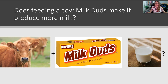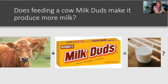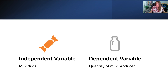Here's another fun example. Our research question is: does feeding a cow little Hershey's Milk Duds make it produce more milk? Imagine one group of randomly selected cows — like a randomized controlled trial — gets fed a Milk Dud as a treat every day, while another group gets no candy snacks. We then see what the milk output is between the two groups and whether eating Milk Duds makes them produce more milk.